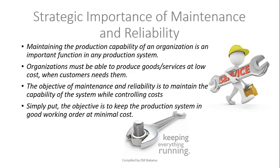Next is the strategic importance of maintenance and reliability — the importance is the same for both. We need to keep everything running and maintain production capability. If a company produces fifty thousand units per day, maintenance keeps that standard. Organizations must also be able to produce goods and services at low cost, because every time a machine breaks down you incur costs, which increase the final cost of the product. The objective of maintenance and reliability is to maintain the capability of the system while controlling costs.